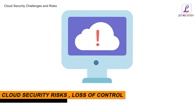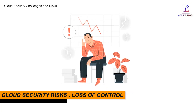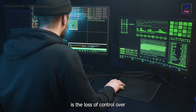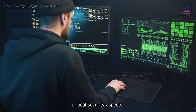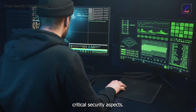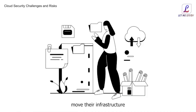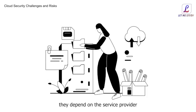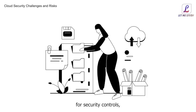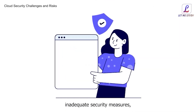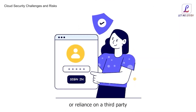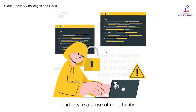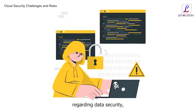Cloud security risks. One of the primary risks associated with cloud computing is the loss of control over critical security aspects. When organizations move their infrastructure and data to the cloud, they depend on the service provider for security controls. Inadequate security measures or reliance on a third party can lead to vulnerabilities and create a sense of uncertainty regarding data security.